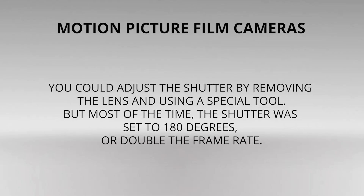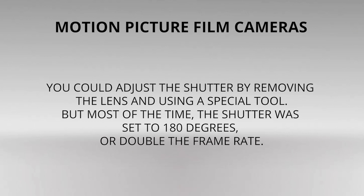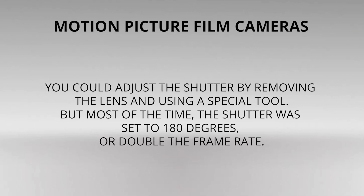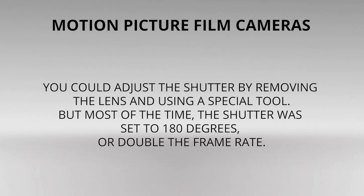Motion picture film cameras were similar. Generally, you'd load the camera with film at the ISO sensitivity you needed, set the aperture, then applied ND until exposure was correct. The shutter was a spinning disc with an opening cutout. You could adjust the shutter by removing the lens and using a special tool, but most of the time the shutter was set to 180 degrees, or double the frame rate.